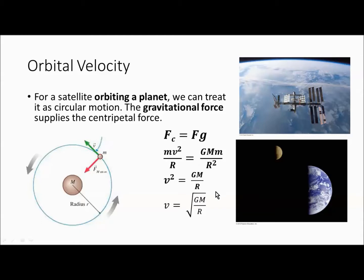Simplify it further. You find that the velocity around a planet is equal to the square root of g times the mass of that planet over the radius. And that's the radius where the satellite is. So that would be this distance here.